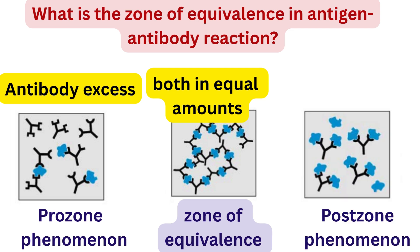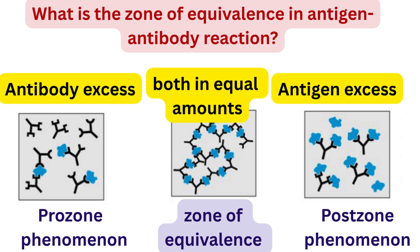Third is the postzone: the antigen is in excess and antibody is too little. Again, there is no proper clumping, and the test may look negative.